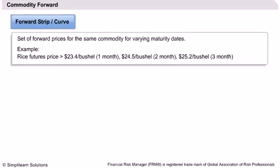A commodity usually has many forwards trading in the market, each with a different maturity. For example, rice futures might trade at $23.4 per bushel expiring in one month, $24.5 per bushel expiring in two months, or $25.2 per bushel expiring in three months. A set of forward prices is called a forward strip, and the curve showing different forward prices for different maturities is called a forward curve.